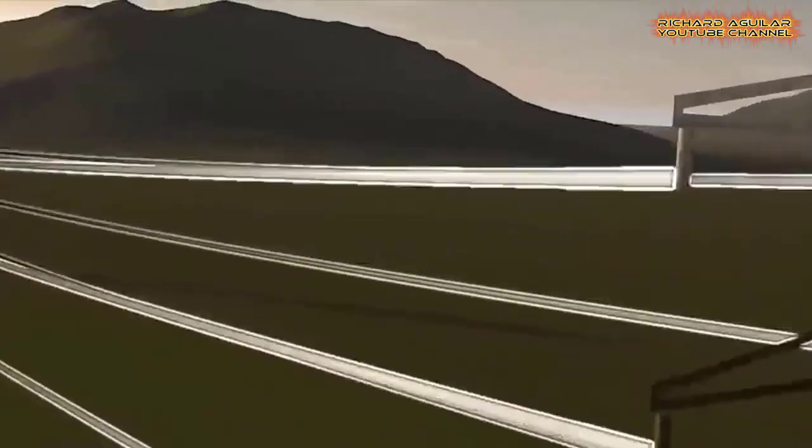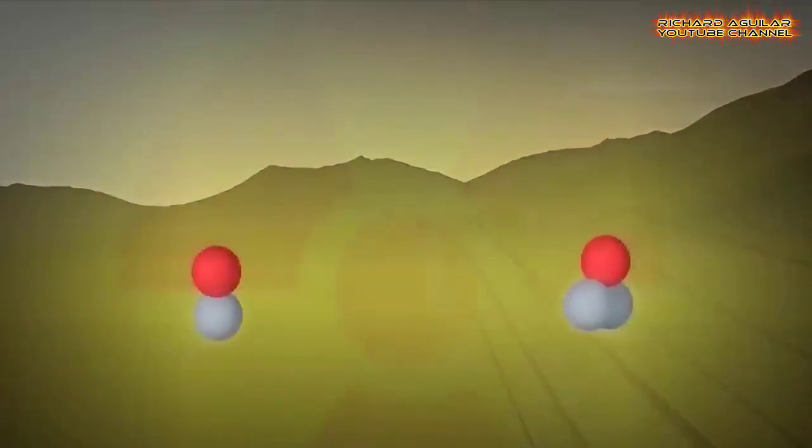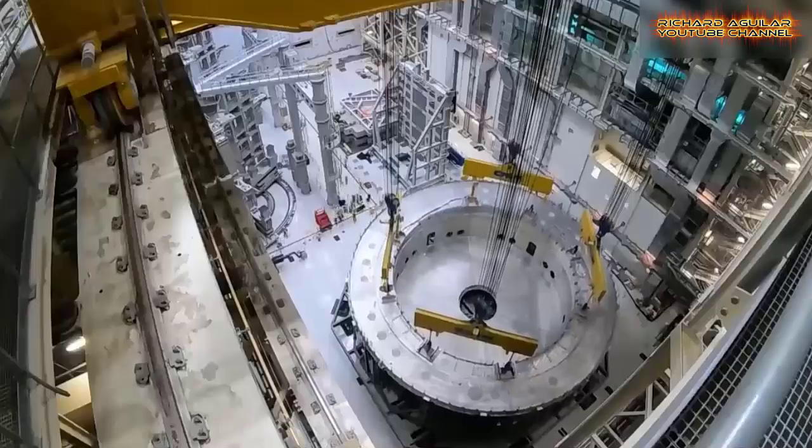The Joint European Torus, or JET, an experimental fusion machine near Abingdon in Oxfordshire, generated around 59 megajoules or 11 megawatts of energy, enough to power around 10,000 homes in a 5-second burst.